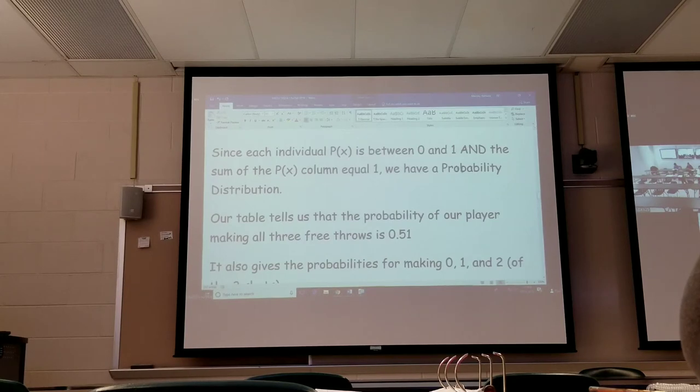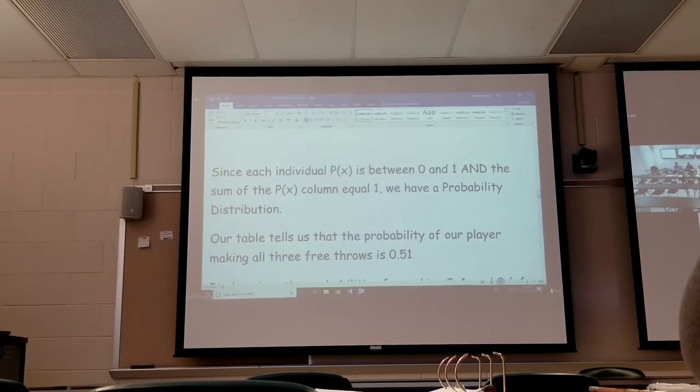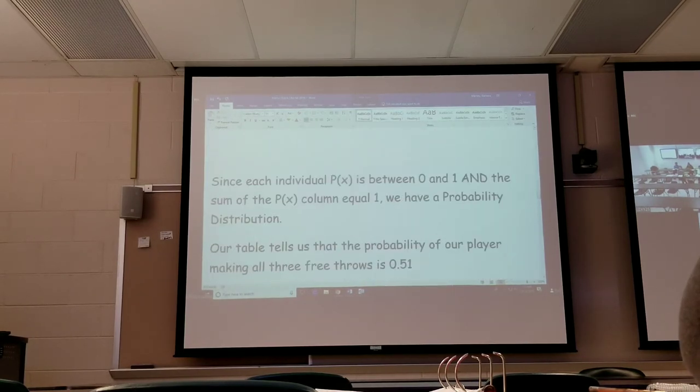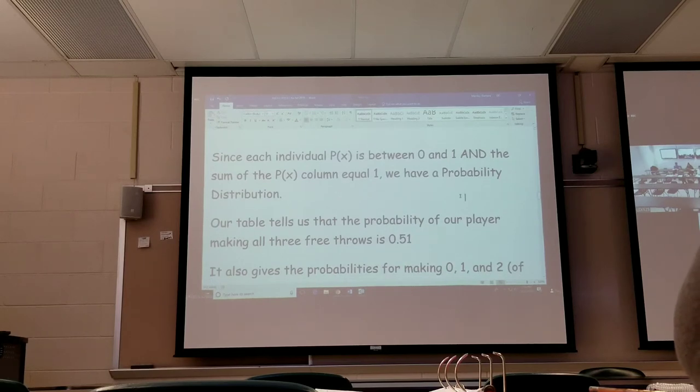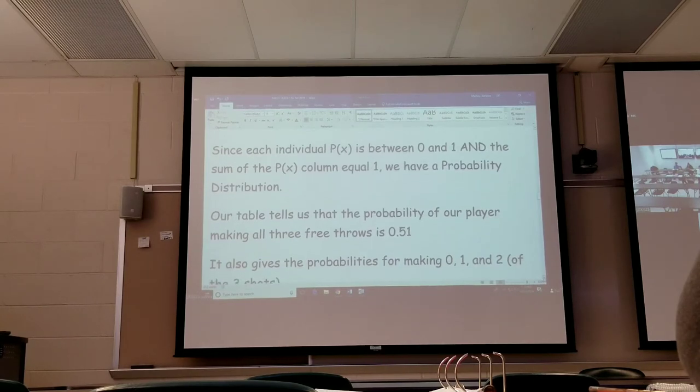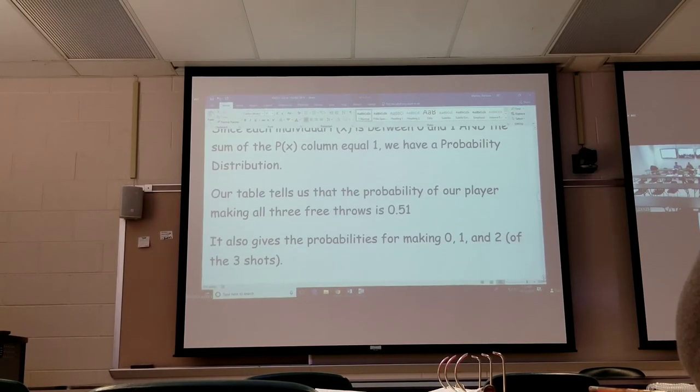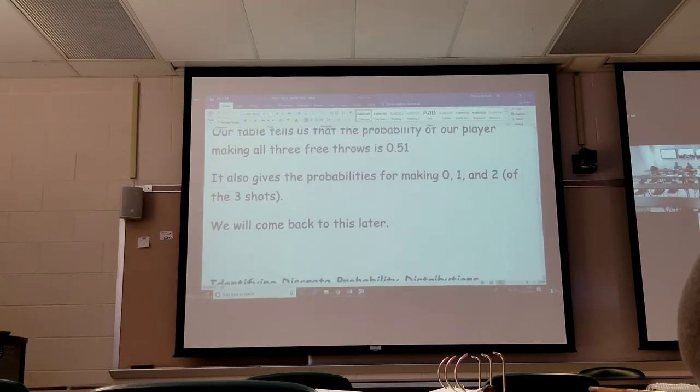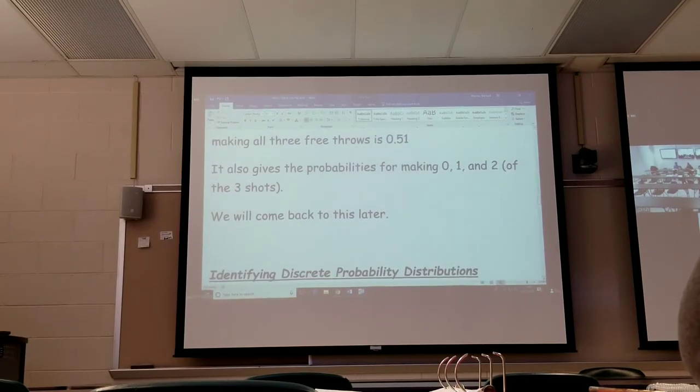Since each individual probability of X is between 0 and 1, and they all were, and if the probabilities add up to 1, we have a probability distribution, which is what we're looking for. Our table tells us the probability for a player making all three free throws is 0.51. It also gives the probabilities for making 0, 1, and 2 free shots.